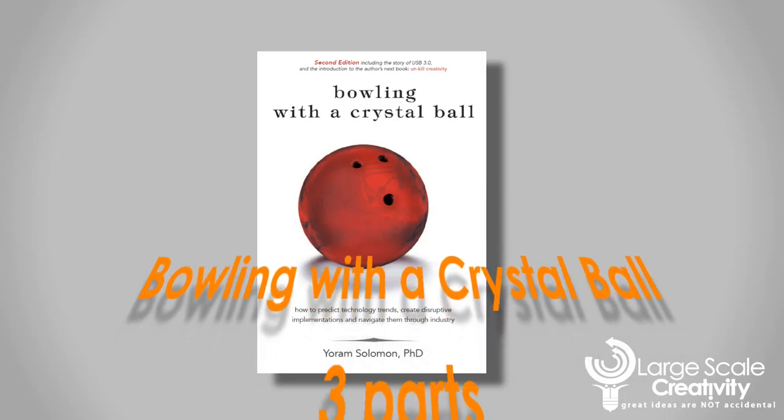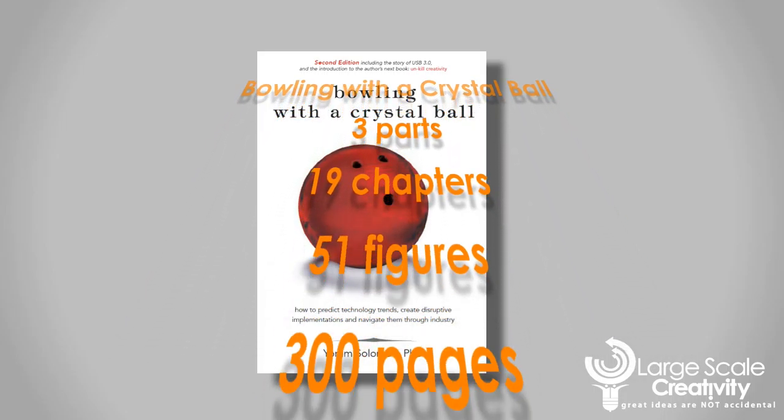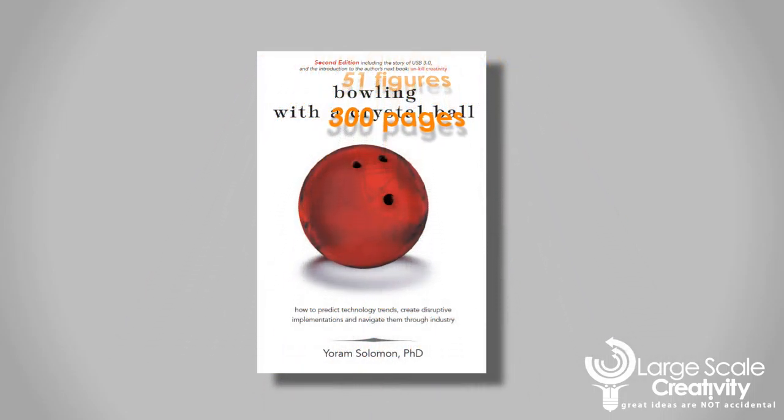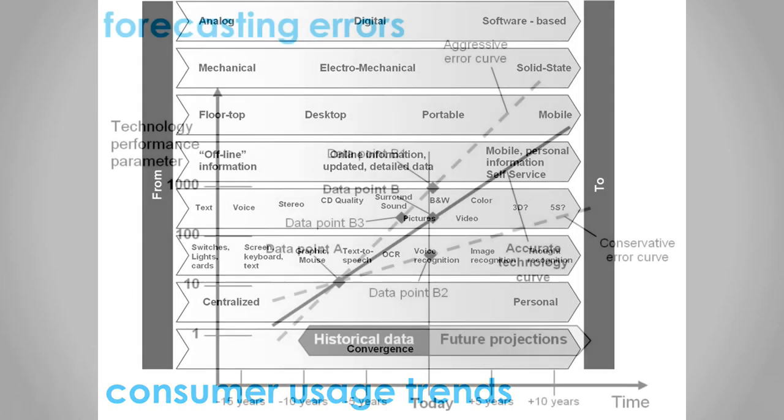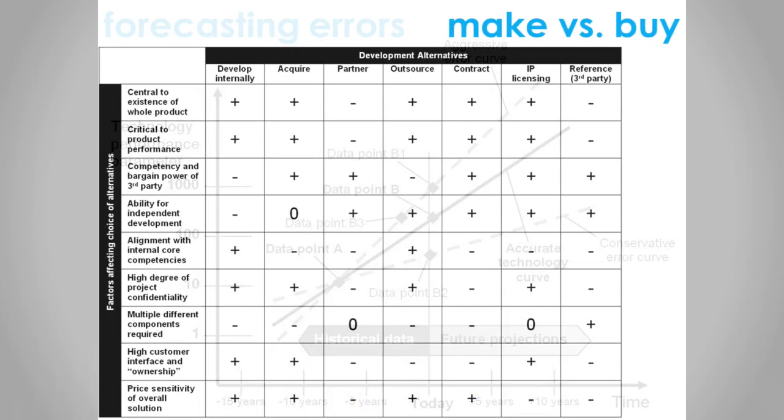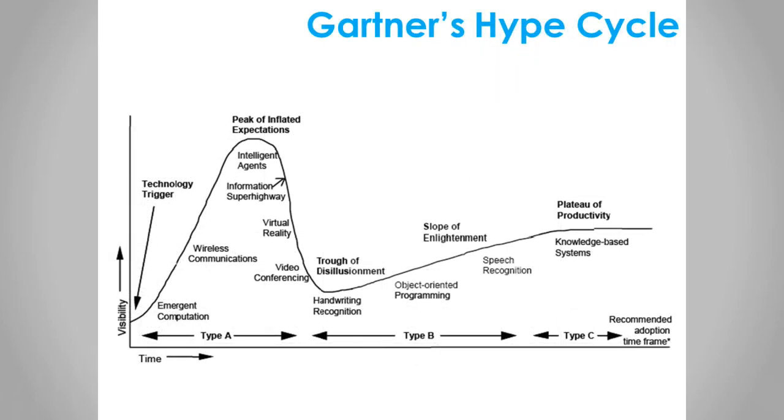The book has 19 chapters with 51 figures in 300 pages. It covers three main industries: personal computers, mobile phones, and consumer electronics. It also covers topics such as the evolution trends, data errors, make versus buy decisions, and the Gartner's hype cycle.